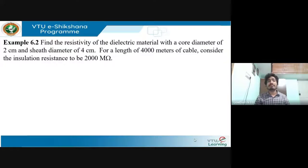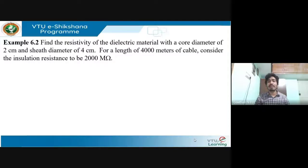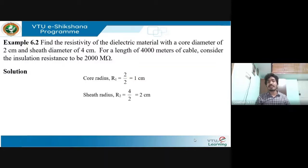The next problem asks us to find the resistivity of the dielectric material. The core diameter is 2 cm and sheath diameter is 4 cm, for a cable length of 4000 meters with insulation resistance of 2000 mega-ohms. Core radius r1 = 2/2 = 1 cm, sheath radius r2 = 4/2 = 2 cm. The value of ln(r2/r1) = ln(2/1) = 0.6931.